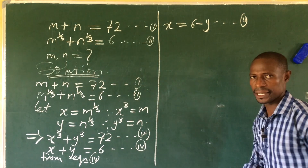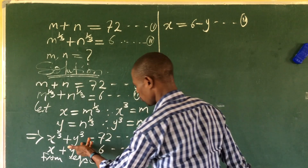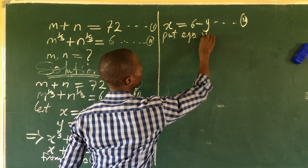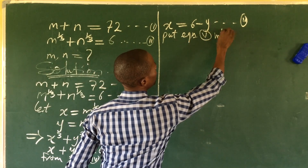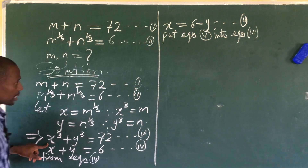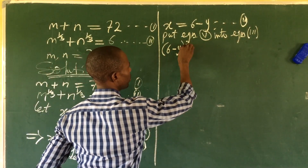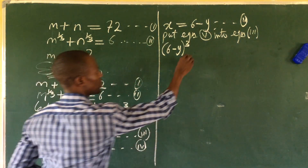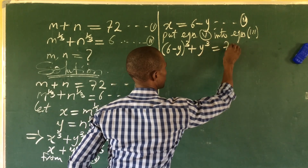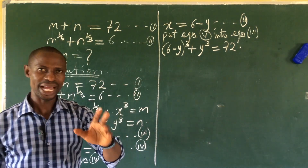We substitute equation five into equation three. This gives us (6 − y)³ + y³ = 72. Now we expand this using binomial expansion.